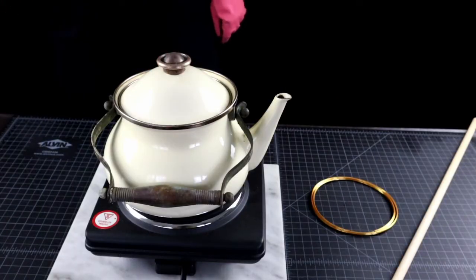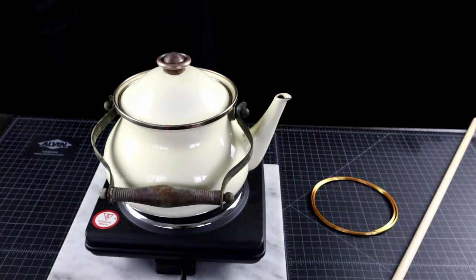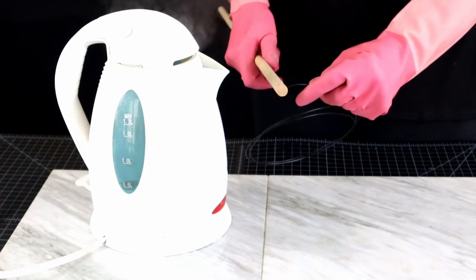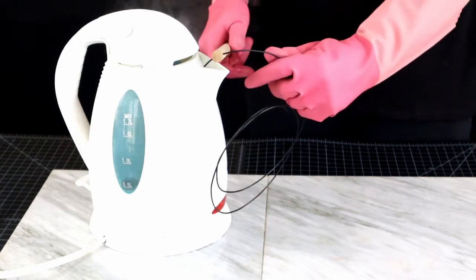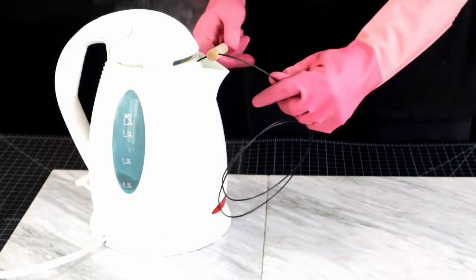Also, if you have one of those kettles that switches off when the water starts to boil, you may need to switch to the old-fashioned kind and do it on the stove. Because you need to maintain a roaring boil for the duration of this process.